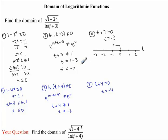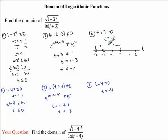Our second restriction is that t cannot equal negative 2, so I'm going to draw an open circle on top of the negative 2 to indicate this. Lastly, we have t is greater than negative 3. Because it cannot equal negative 3, I need to draw an open circle on top of the negative 3. And we know it's going to be anything greater than negative 3. So essentially we have the interval from negative 3, not including negative 3, up until 0 and including 0, however excluding the number negative 2.